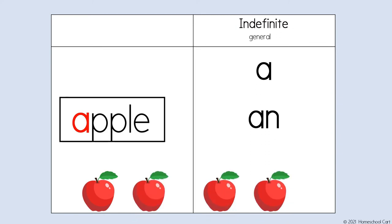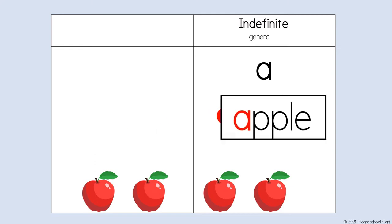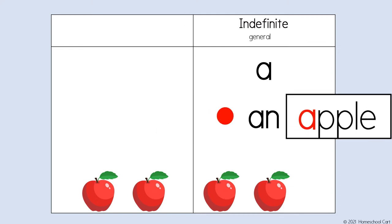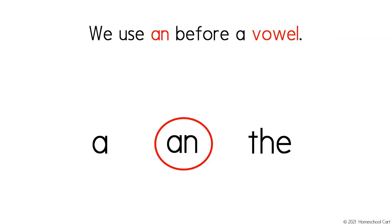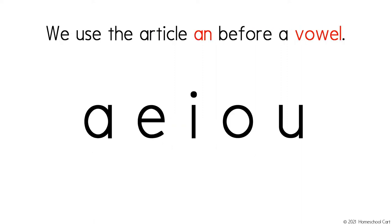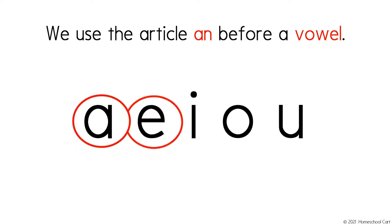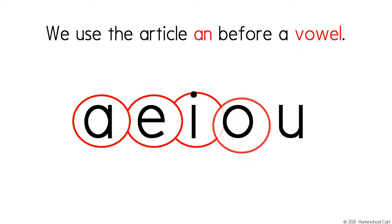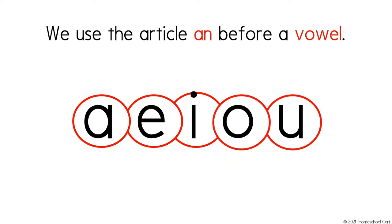For example, we would say an apple. Apple begins with a vowel. We use an before a vowel. The vowels are a, e, i, o, and u.